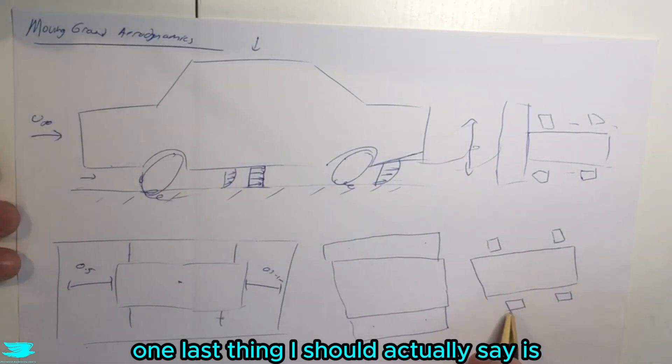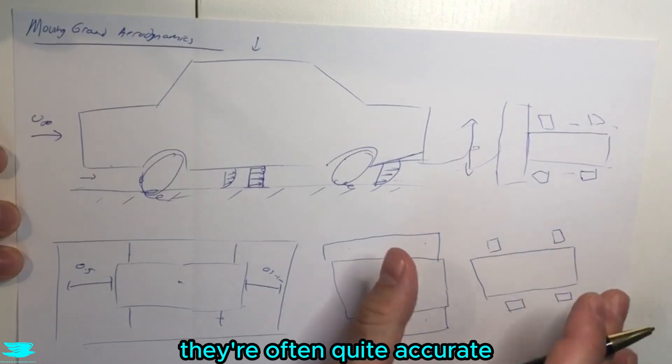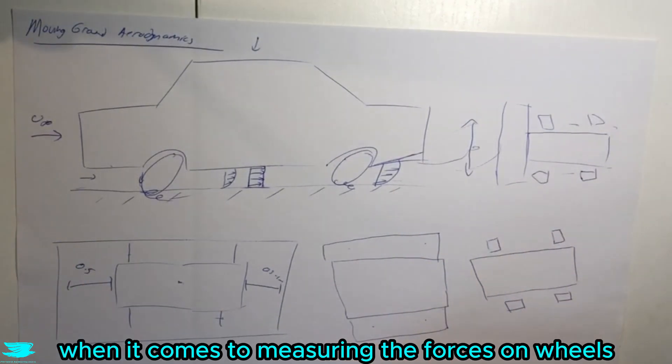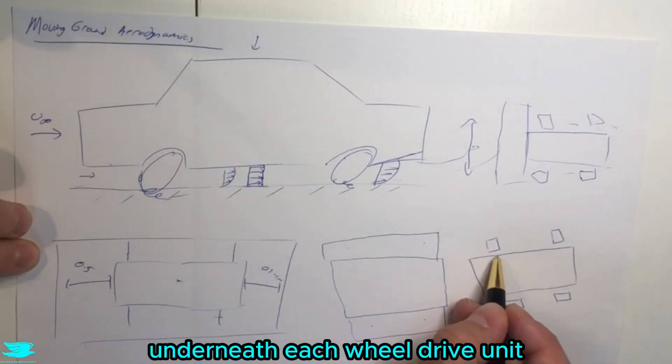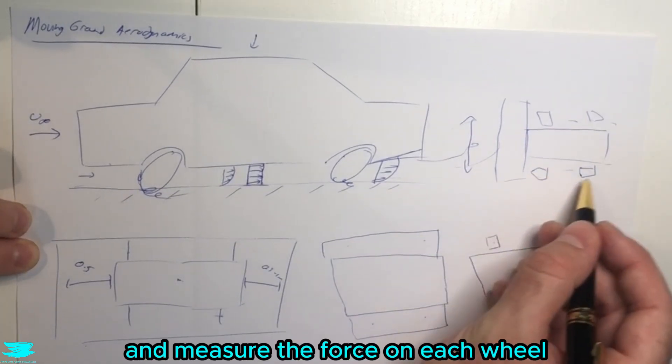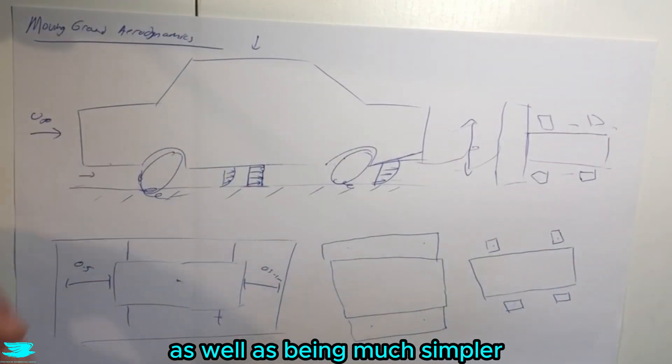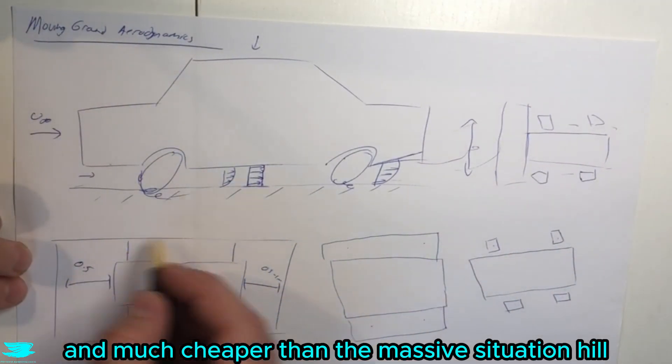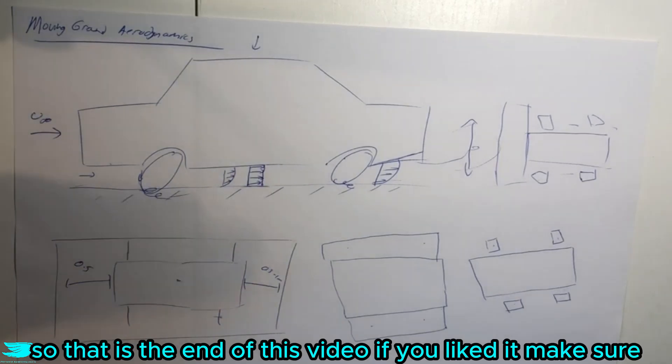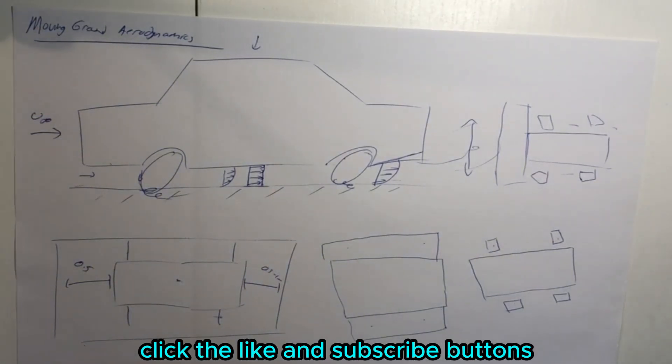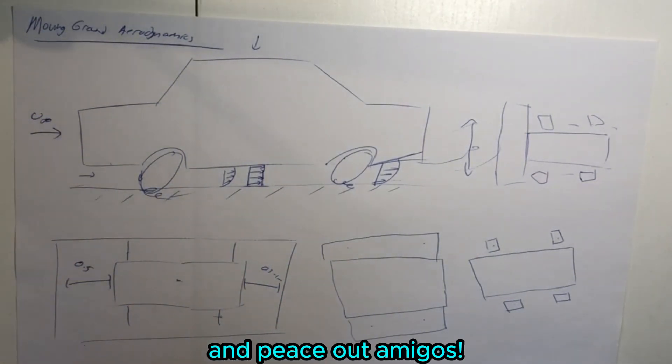So that is the moving ground aerodynamics of a car and different systems to get around that. One last thing I should say is with these wheel drive units, they're often quite accurate when it comes to measuring the force on wheels because you can put a load cell underneath each wheel drive unit. That is an advantage as well as being much simpler and cheaper than the massive situation here. If you liked it, make sure to click the like and subscribe button. Peace out guys.